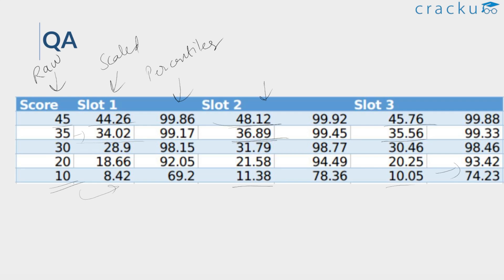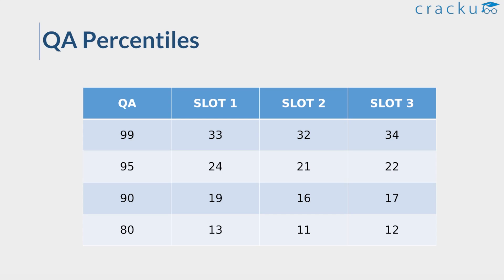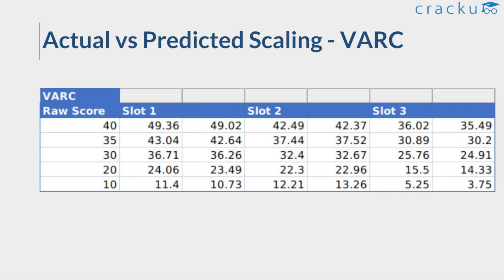Across all three sections, the scaling in the Quant section remained very close to the raw scores. Now looking at the percentiles: for 99 percentile in Slot 1 you would need around 33 marks, 32 marks in Slot 2, and 34 marks in Slot 3. For 90th percentile: around 19 marks in Slot 1, 16 marks in Slot 2, and 17 marks in Slot 3. These are also the raw scores for the 80th percentile.